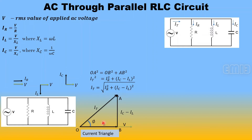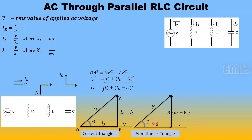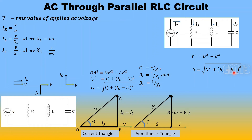Since IR, IC, and IL are ratios of voltage to resistance or reactance, replacing them with V/R, V/XL, V/XC and factoring out V, we get an admittance triangle where G = 1/R (conductance), BC = 1/XC (capacitive susceptance), and BL = 1/XL (inductive susceptance). From this triangle: Y² = G² + B², so Y = √(G² + (BC − BL)²).